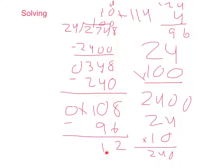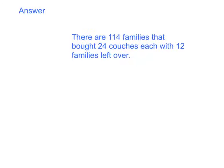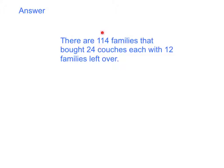But 12 is your remainder, so there will be 12 couches left over that don't make a complete group, and 114 groups that get 24 couches each. In the end, our final answer is there are 114 families—114 is our answer or our quotient—that bought 24 couches, which was our divisor, with 12 as our remainder.